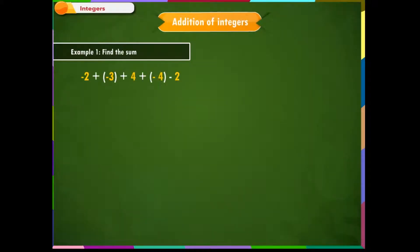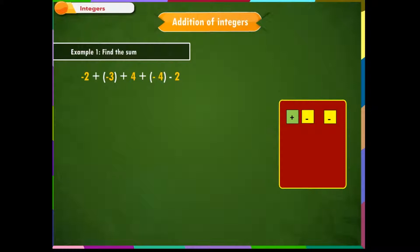Let us now find the sum of a more complex problem. Before solving, here is a quick recap: plus and minus becomes minus; for adding two negative numbers, add their values and prefix a minus sign; for adding a positive and negative integer, find the difference and prefix the sign of the greater value. Step 1: Look for double signs. If there are any, remove them first. This becomes minus 2, minus 3, plus 4, minus 4, minus 2.